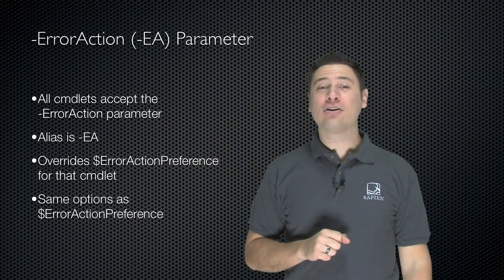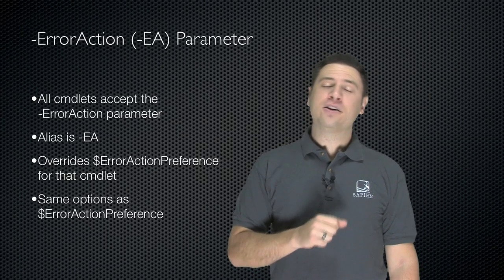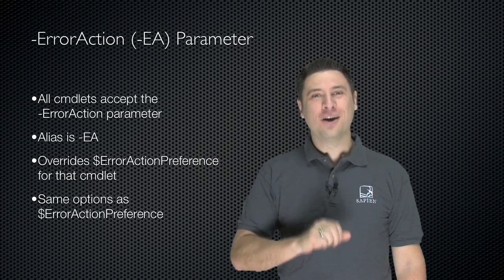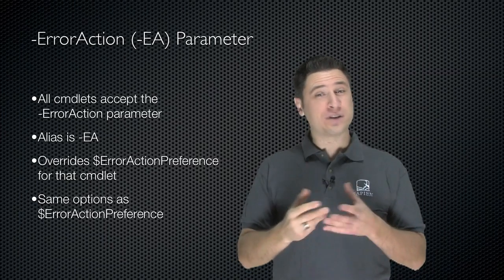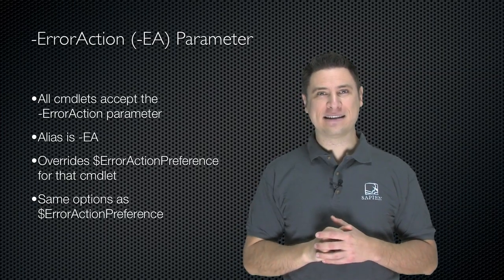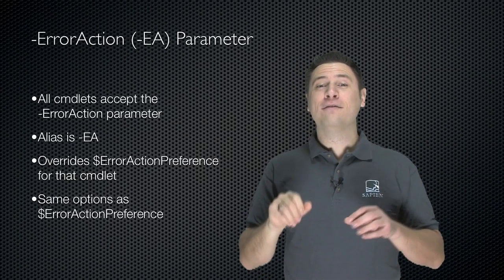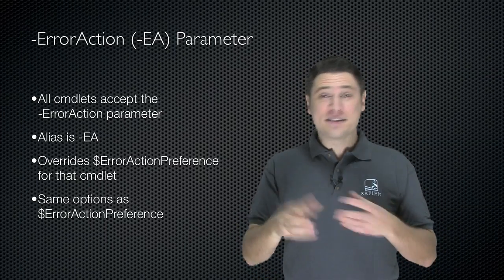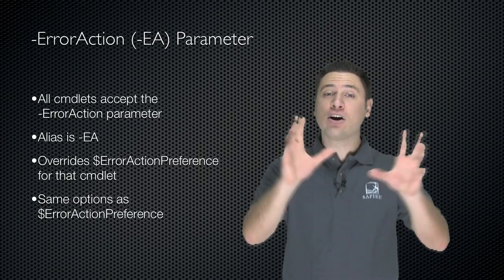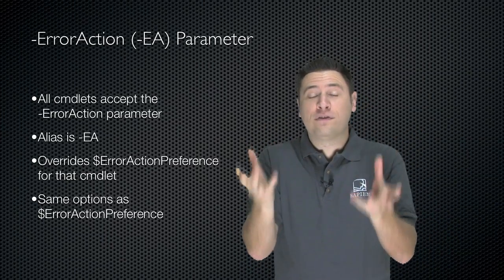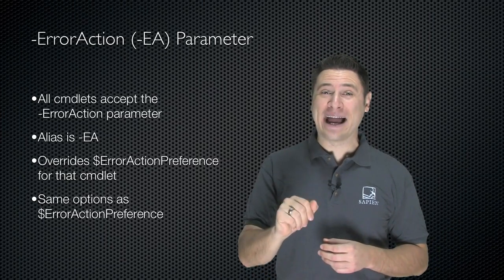Next, there's the -ErrorAction parameter that comes with every single cmdlet in PowerShell. You can type -ErrorAction, but there's a convenient alias: -EA. All cmdlets accept this parameter, and it overrides the default $ErrorActionPreference for the current cmdlet. It has the same options: Continue, SilentlyContinue, Stop, and Inquire. So you set $ErrorActionPreference as the default for your current scope, and if you need a particular cmdlet to behave differently, use its -ErrorAction parameter.